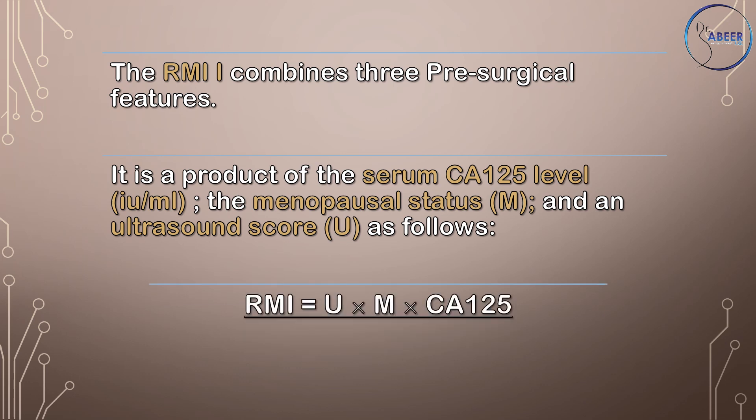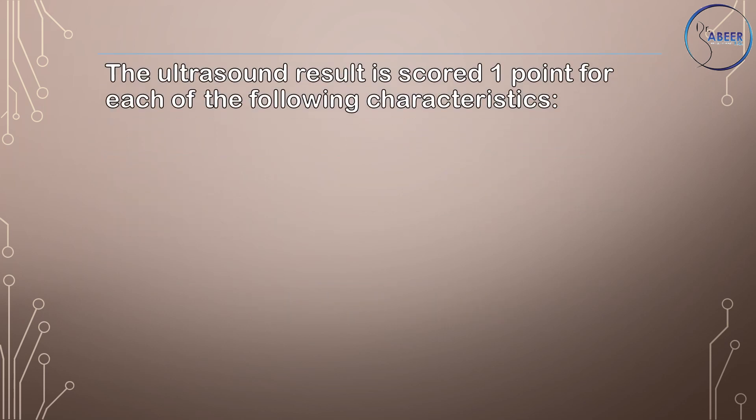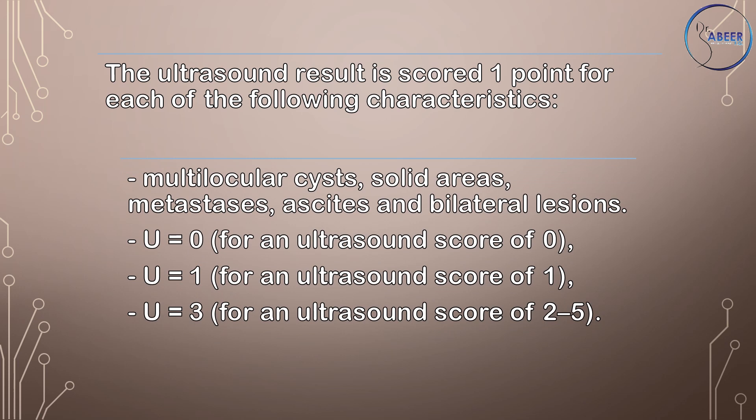RMI = U × M × CA-125. The ultrasound result is scored one point for each of the following characteristics: multilocular cysts, solid areas, metastasis, ascites, and bilateral lesions.